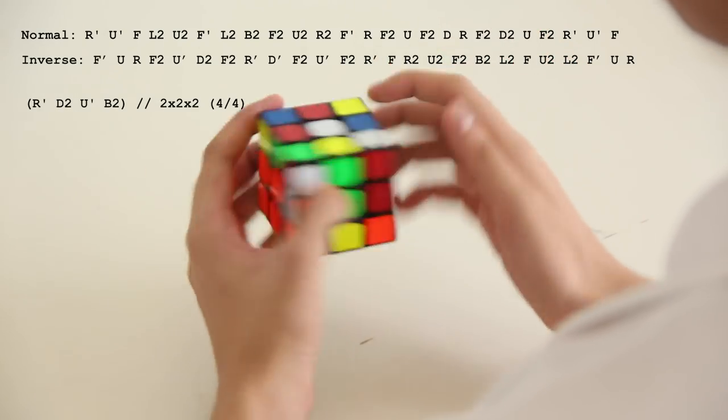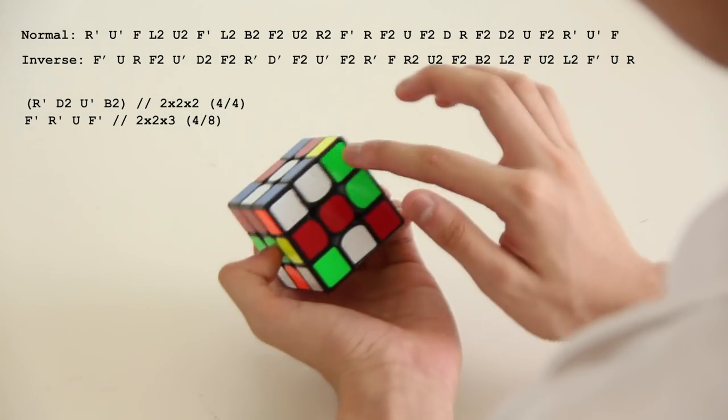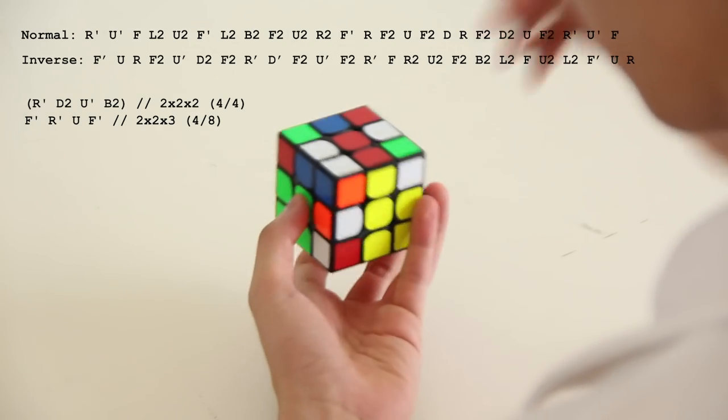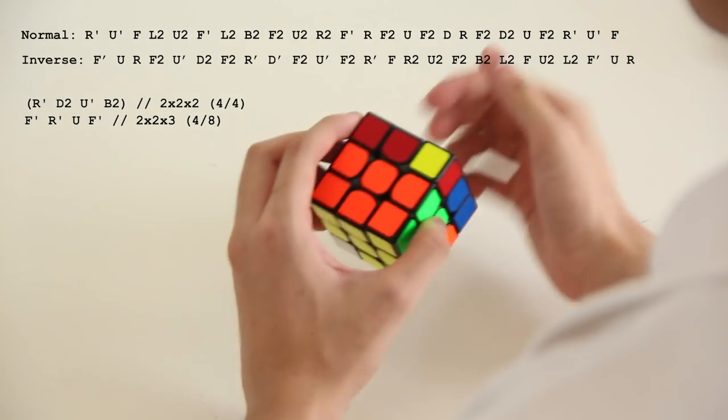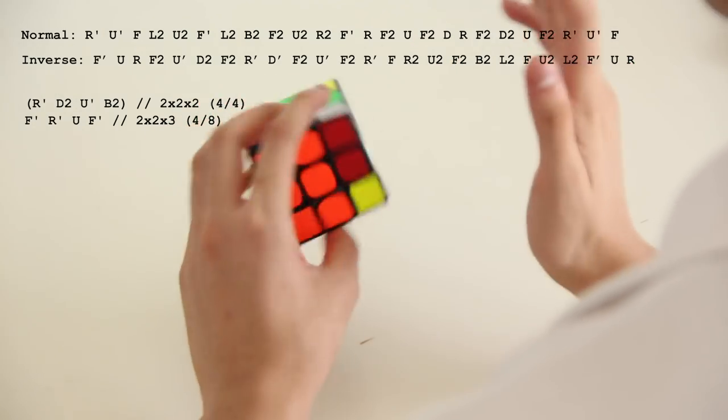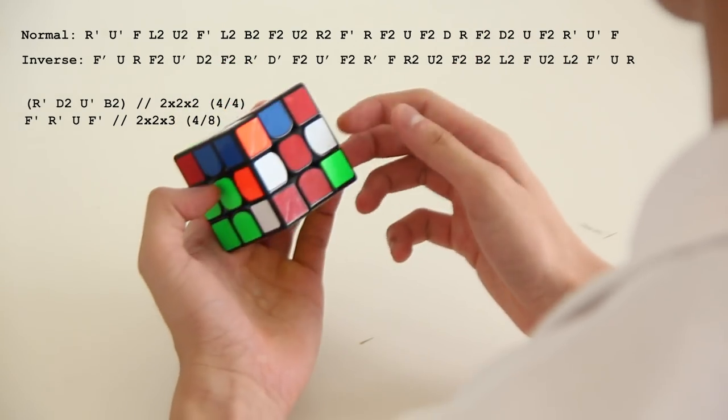So in the normal scramble, this really obvious 2x2x3 appears, which is F' to set this edge up, and then we can insert this F12 pair, R', U, and then F'. And that gives 8 moves to a 2x2x3, and then after this I didn't find anything, so I switched back to the inverse scramble.